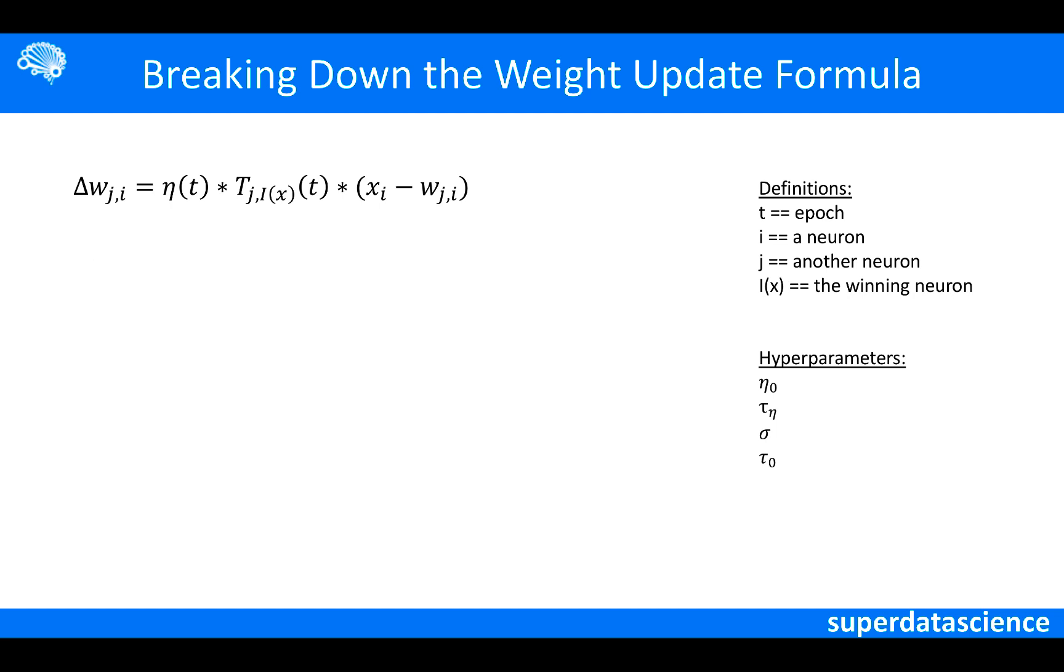Let's break down the weight update formula. The first variable, eta, is a learning rate. Here, the learning rate depends on the epoch and a couple of hyperparameters. As the epoch grows, the learning rate will decrease, and the effect of this is that over time, the weights will update less and converge on a value.